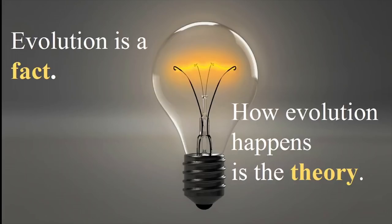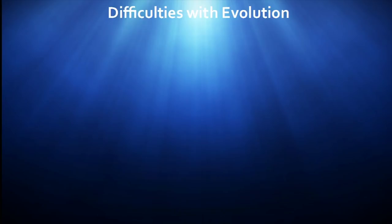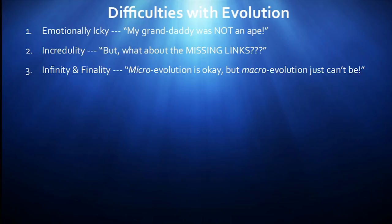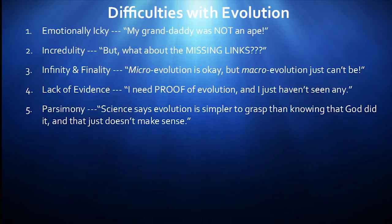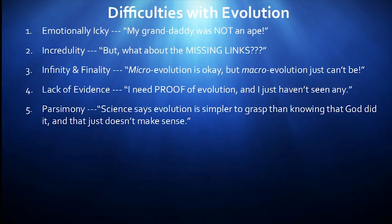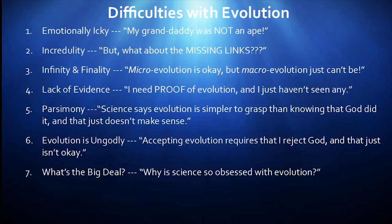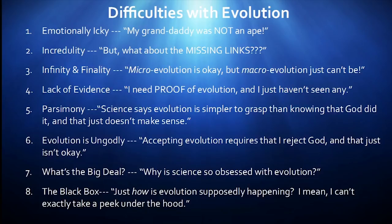Where things get hairy is how we explain how evolution occurs, and that's where the theory comes in. Evolution is a fact. The eight difficulties my husband came up with: first was the emotionally icky business. Incredulity. What about the missing links? Infinity versus finality — the difficulty people have with understanding the time scale. Lack of evidence — they think there's no evidence, which is ridiculous. Parsimony — they think God is the simplest answer, but really evolution is the simplest answer. Evolution is ungodly — that's a tough one. They don't understand why science is so obsessed with it. And last of all, the black box — how is it actually happening? I can't look under the hood and see what's going on, so it can't be real.